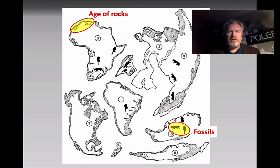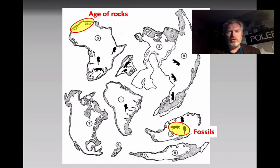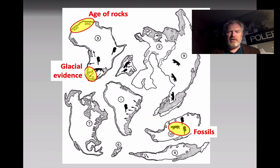We also need to think about the fossils found. I've given you data on two different types of fossil — an animal and a plant — and they need to match up too, because they would have grown or lived in similar places. We also need to consider glacial evidence: during the time of Pangea there was a large glaciation, so the glacial deposits and importantly the direction the glaciers were moving need to match as well.